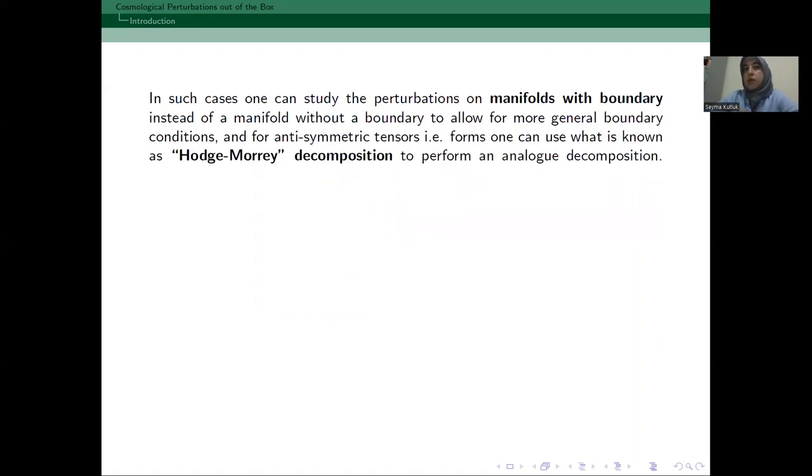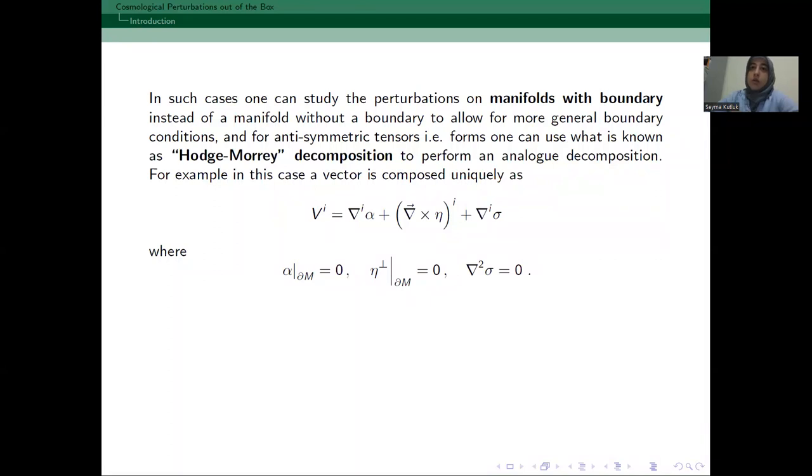And for anti-symmetric tensors, one can use what is known as Hodge-Morrey decomposition to perform a similar decomposition. For example, a vector in this case is decomposed as a gradient, a curl, and as an extra harmonic part. But now we have to impose some boundary conditions on the gradient and curl parts.